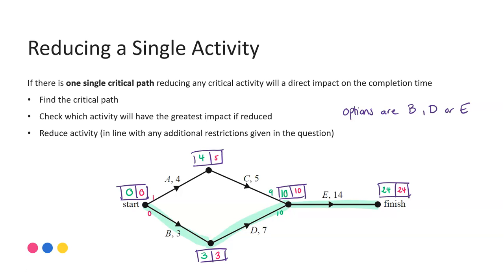Looking to find which will have the greatest impact — if there are no other restrictions, I think about what happens if I completely eliminate that particular activity, making it a dummy with a duration of zero. If B was zero, tracking forward, activity D finishes at seven, but I would have to move forward with nine from the other path, giving an overall completion time of 23. So B would only save me one unit of my finish time.